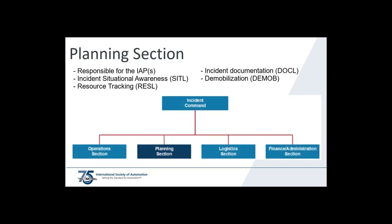The planning section chief is responsible for planning and documenting the IAP. The planning section manages incident information, maintains situational awareness, tracks resources assigned or checked into the incident, and maintains documentation. It also plans for and implements a demobilization process so responders can return equipment such as computers, radios, and shovels, and deliver paperwork before they are officially checked out of the incident.